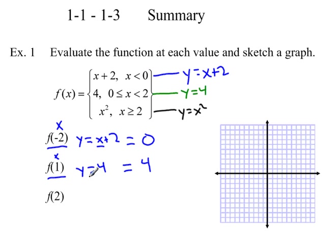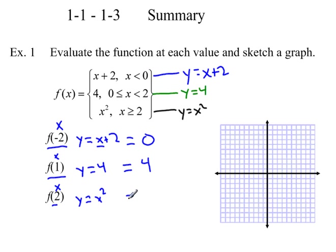Last, f(2): the first piece is only for x less than 0, so we skip that. The second piece says x is less than 2 — not equal to 2. The third piece says x is greater than or equal to 2, so we use that one: y equals x squared. Plugging in 2 gives us 2 squared, which equals 4.